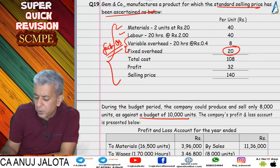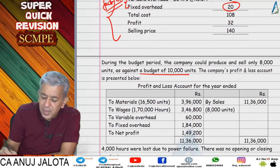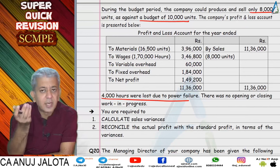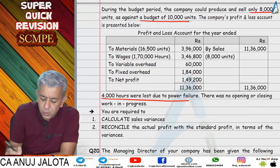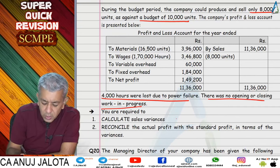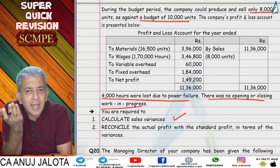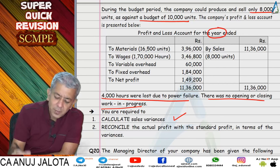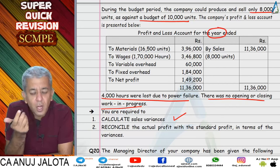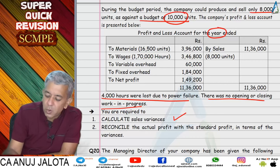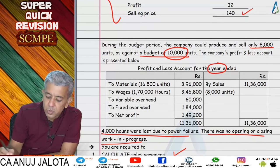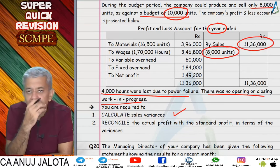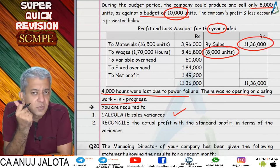We thought we'd produce and sell 10,000 units, but in reality we only produced and sold 8,000 units. There was idle time, so idle time variance also comes. There were no stocks. You calculate all sales variances — sales variances depend upon period. In this question the period was one year. In one year you should have sold 10,000 units at 140 rupees; in reality you sold 8,000 units at the actual price. We find out all seven sales variances.